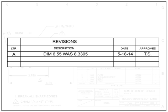The sequence for revision letters starts with A as the first revision, followed by B for the second, and so on. A drawing that has had no revisions has a blank revisions block. The description area contains the general change information as well as what prompted the change. Documents that initiate drawing changes are called engineering orders, engineering change orders, or engineering change proposals, and are typically given a number referenced in the description of the change on the drawing.